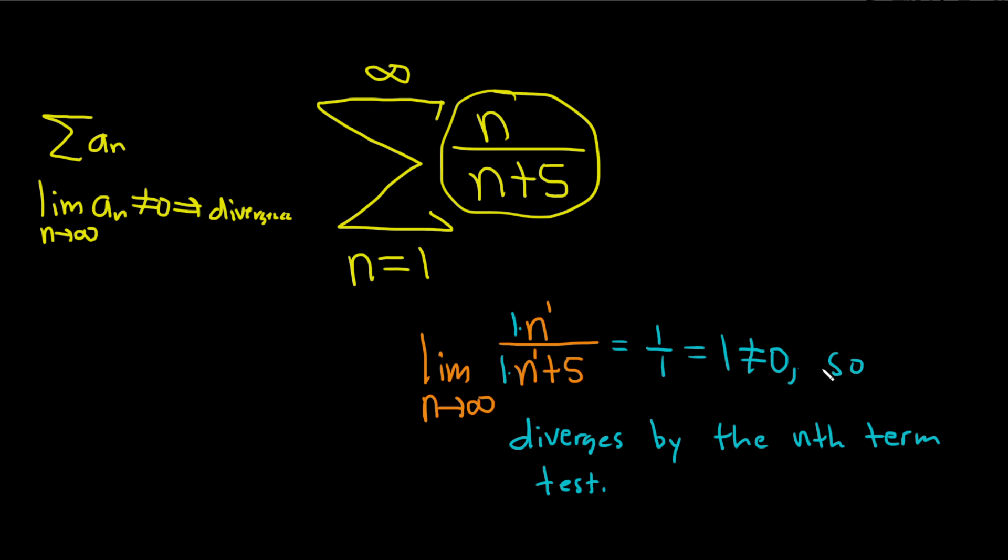So you want to state the condition of the test and then specify the test. And that would be it. So we have a divergent series. I hope this video has been helpful.